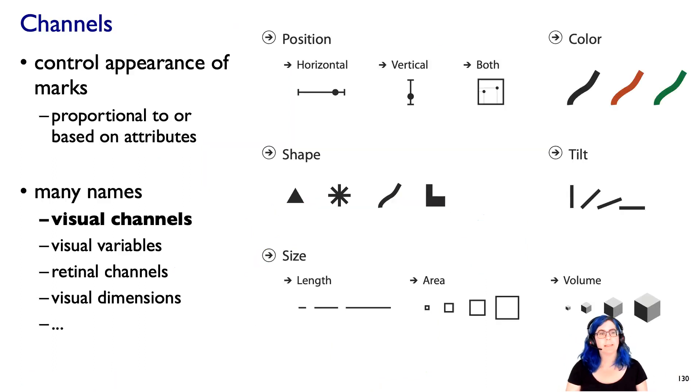We have this idea that channels are controlling the appearance of marks, and we're doing that in a way that is proportional to, or somehow based on, attribute values. We can think of things like spatial position on the display, or color, or orientation, tilt, or shape, or the varieties of size, length, and area, and volume.